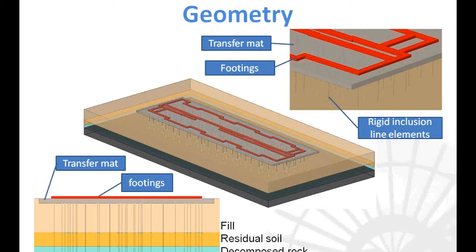Since bedrock was encountered at 30 feet, the inclusions were designed to be drilled to bedrock. In the model, the inclusions were simplified as 3D line elements. An alternative would be to model each inclusion as an actual cylinder with an interface surface between the inclusion and soil to capture the soil-structure interface, but this would require many more elements and significantly more computation time. Since the inclusions were drilled to bedrock, line elements were used.